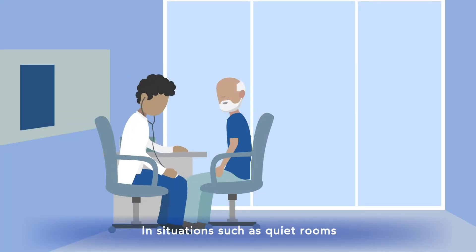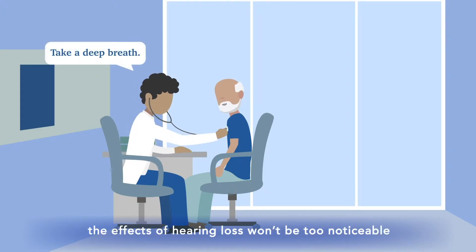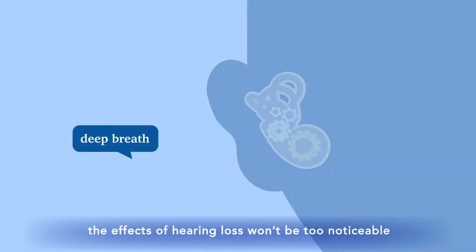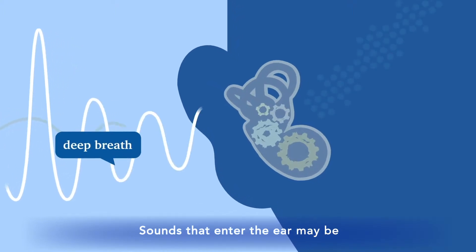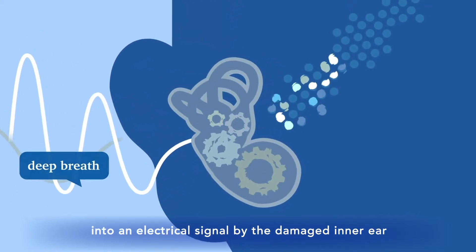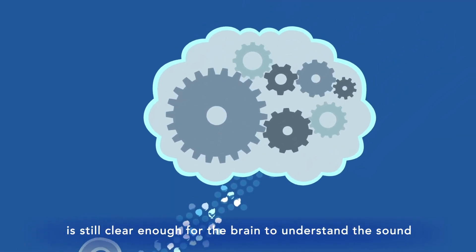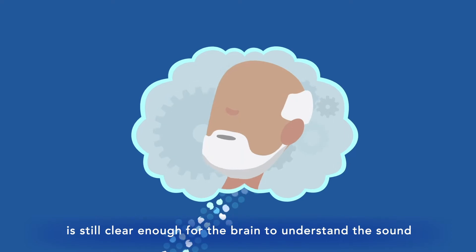In situations such as quiet rooms where the incoming sounds are still clear, the effects of hearing loss won't be too noticeable. Sounds that enter the ear may be inaccurately converted into an electrical signal by the damaged inner ear, but the resulting electrical code that goes to the brain is still clear enough for the brain to understand the sound.